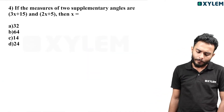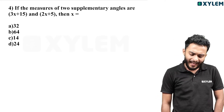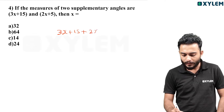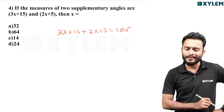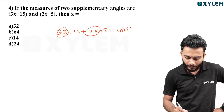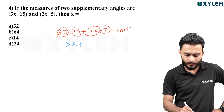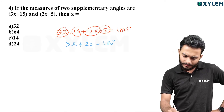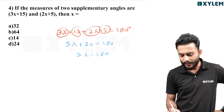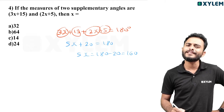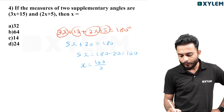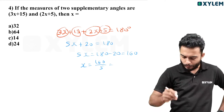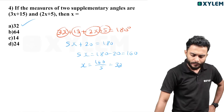The measure of two supplementary angles are 3x plus 15 and 2x plus 5. Since supplementary angles sum to 180 degrees: 3x plus 15 plus 2x plus 5 equals 180, so 5x plus 20 equals 180, 5x equals 160, x equals 32. Option A.